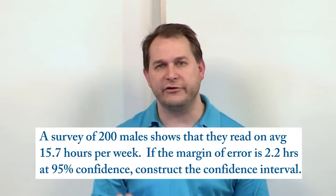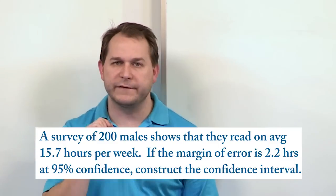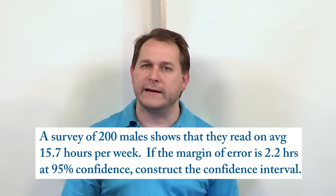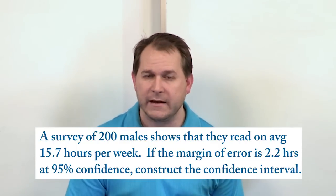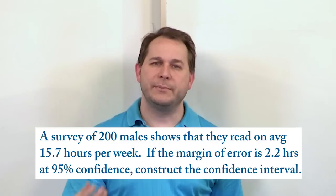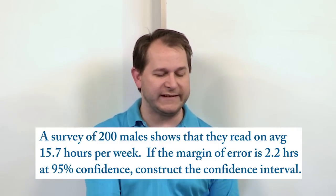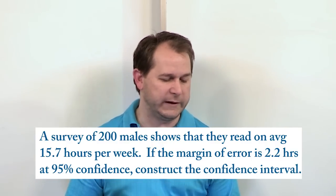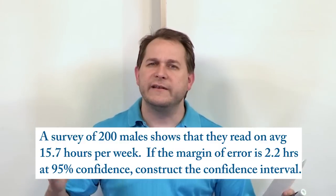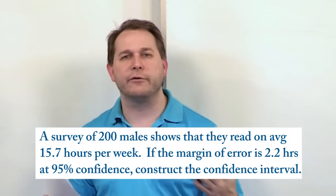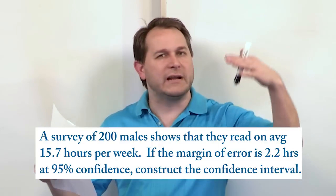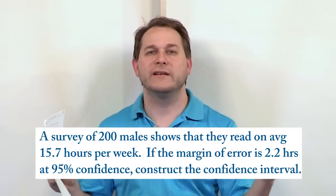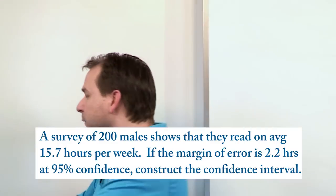There's two key things you need to understand before you can solve this problem. When we take a survey like that and get the sample mean, the point estimate for the population mean is going to be equal to the sample mean. We're sampling 200 males showing they read 15.7 hours a week. We're trying to find a confidence interval that's going to be a lower bound and an upper bound that will contain the population mean. Let's write things down.